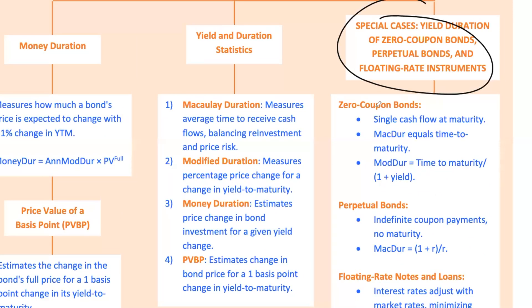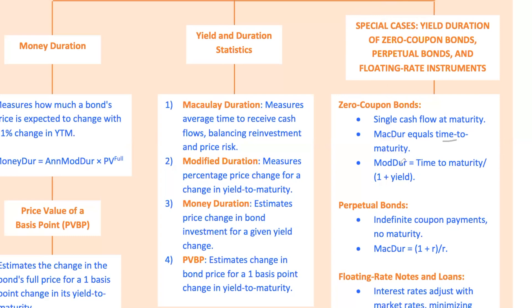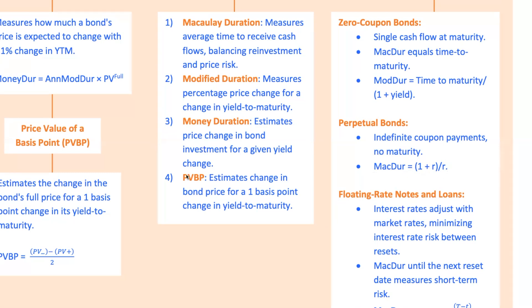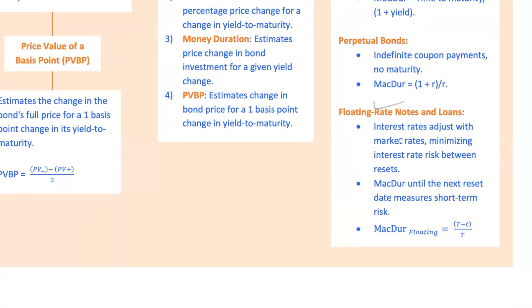Let's quickly touch on some special cases where duration measures behave a bit differently. For zero-coupon bonds, since they only have one cash flow at maturity, the Macaulay duration equals the time to maturity, and modified duration is simply the time to maturity divided by 1 plus the yield. Perpetual bonds pay coupons indefinitely and never mature; the Macaulay duration formula becomes (1 + R) / R, where R is the yield. For floating rate notes, because their interest rates adjust with market rates, their duration is short — essentially limited to the time until the next rate reset — minimizing interest rate risk between resets.